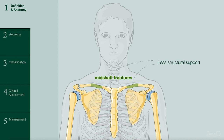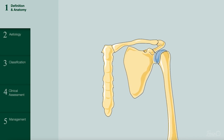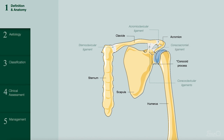Before going into more detail about clavicle fractures, we need to first cover some basic anatomy. Here is the sternum, clavicle, scapula, the acromion and coracoid process of the scapula, and the humerus. There are also multiple ligaments that hold these bones together: the sternoclavicular ligament, the acromioclavicular ligament, the coracoclavicular ligament, and the coracoacromial ligament.